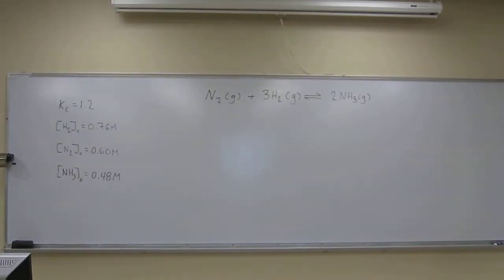So this problem says for the synthesis of ammonia, the equilibrium constant Kc at 375 degrees Celsius is 1.2. We have that written up there. Starting with an initial concentration of hydrogen of 0.76 molar, nitrogen at 0.60 molar, and ammonia at 0.48 molar.